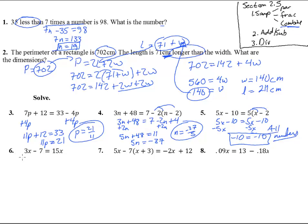Number six. We don't have any parentheses, fractions, but we do need to combine these together. There's minus 3X. We have negative 7 equals 12X. Divide both sides by 12. We get X equals negative 7 twelfths.